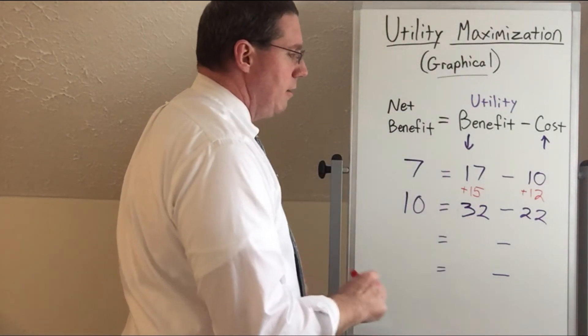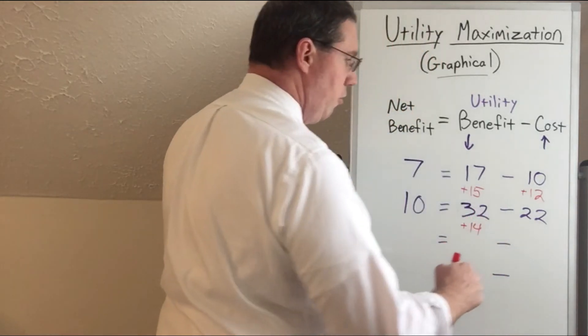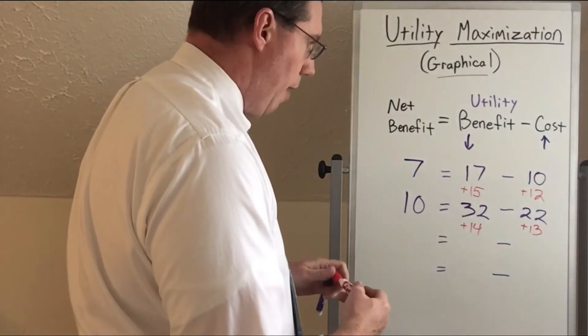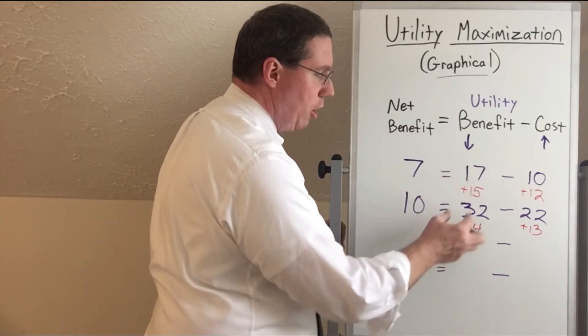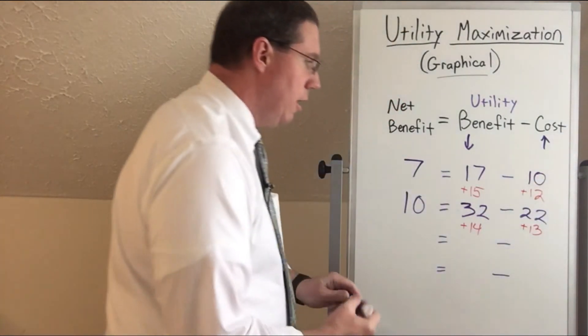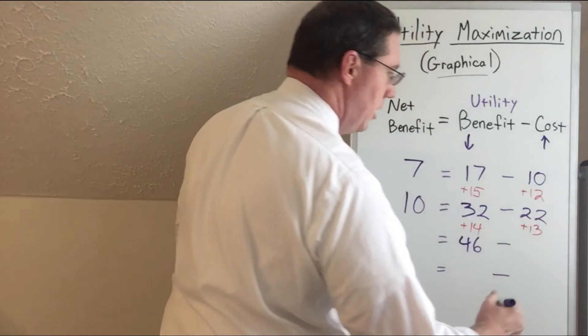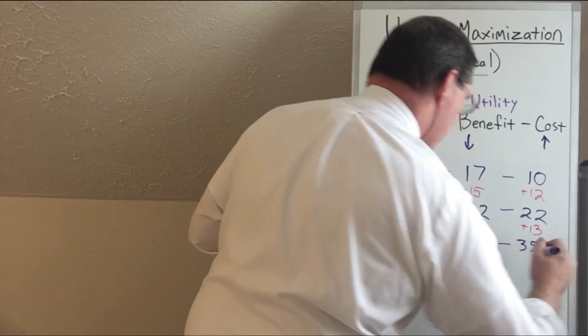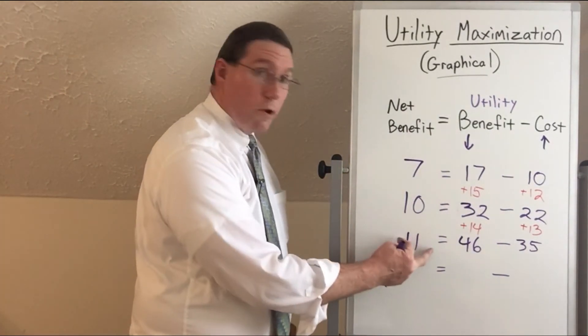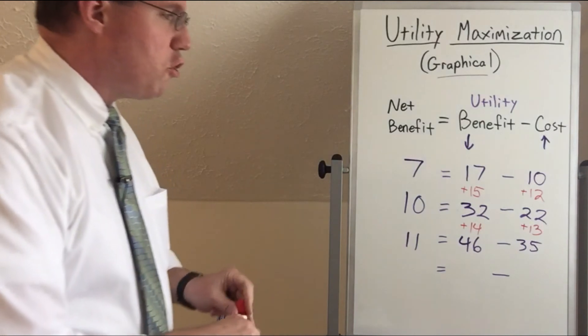But let's say as we go to the third one, the third one is going to give us 14 more. We'll add 14 to the 32, but the cost is higher than 12. Let's say the cost of this third one is 13 because of the law of increasing opportunity costs. You can see that the added benefit is getting smaller: 17, then 15, then 14. But the added cost is increasing: 10, then 12, then 13. So now if we add them up again, 32 plus 14 is 46, 22 and 13, that's 35. So now 46 minus 35, that's 11. Now it's not that much more, only one more, but it's still more. We're getting more satisfaction here, so let's stick with it.